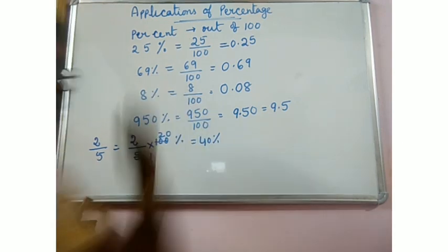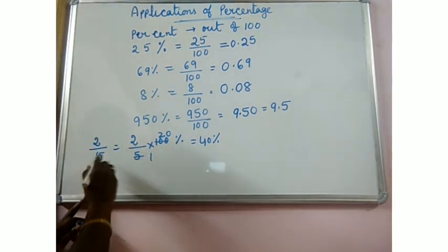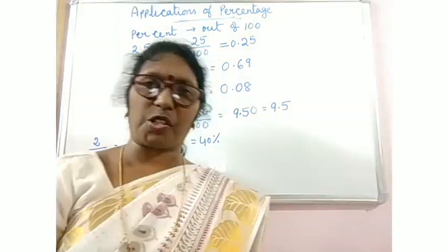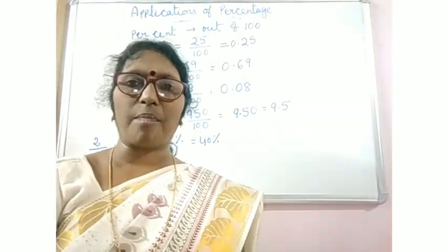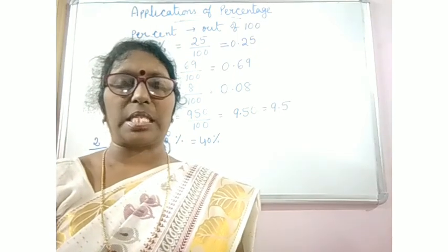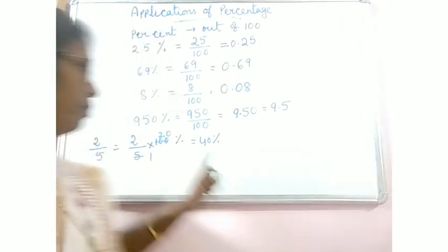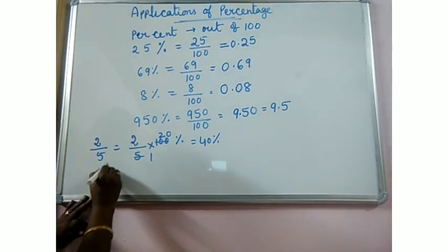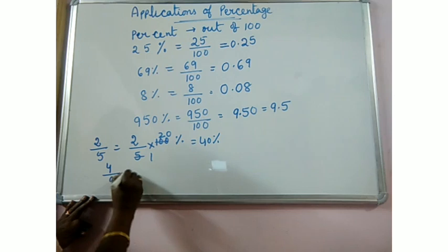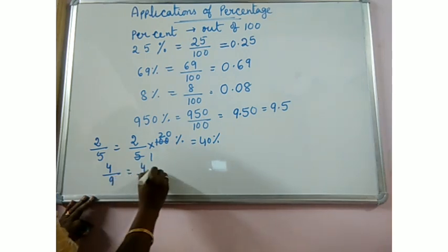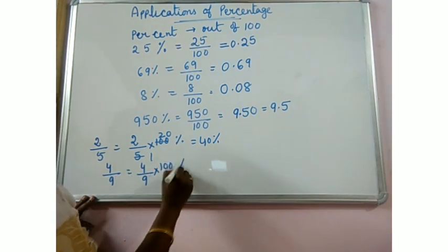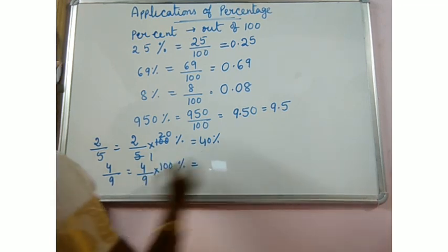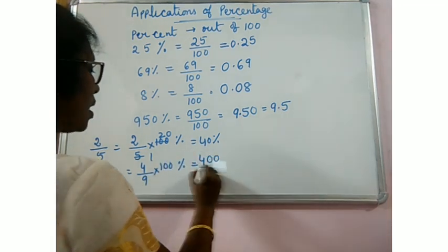Let me give you one more example. 4 by 9. If you want to convert to percentage, 4 by 9 into 100%. We are not able to cancel. We will get 400 by 9%.